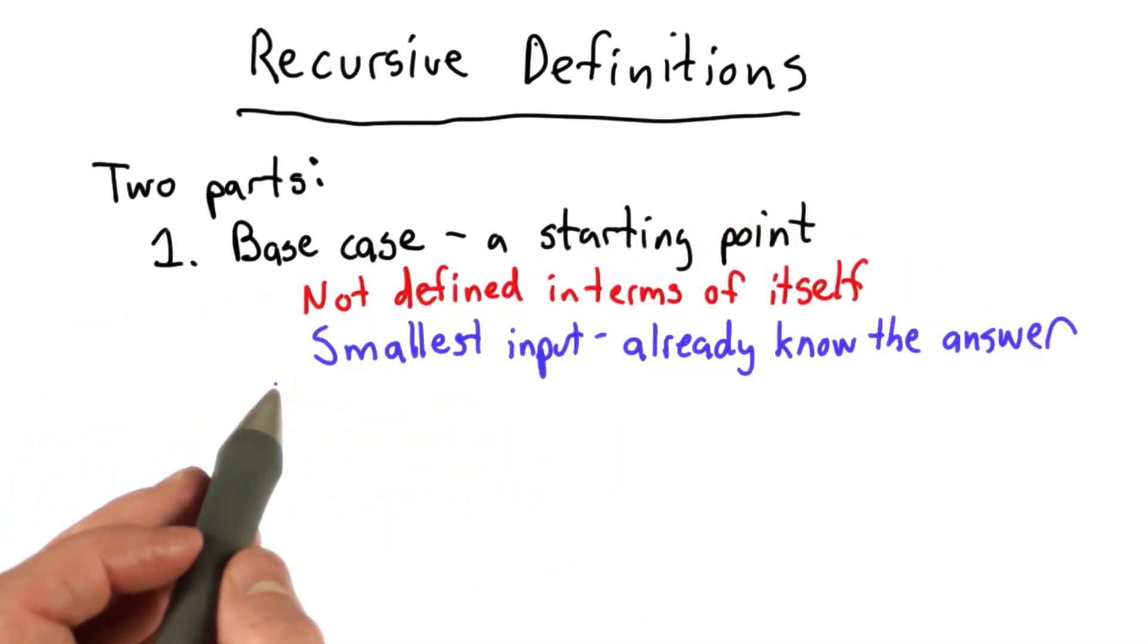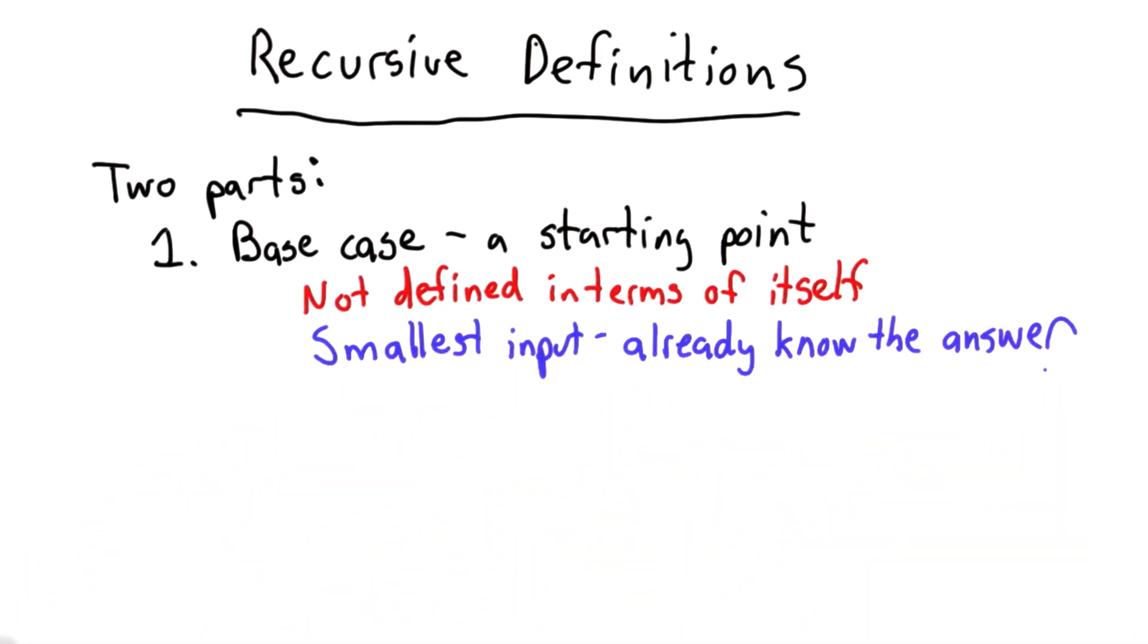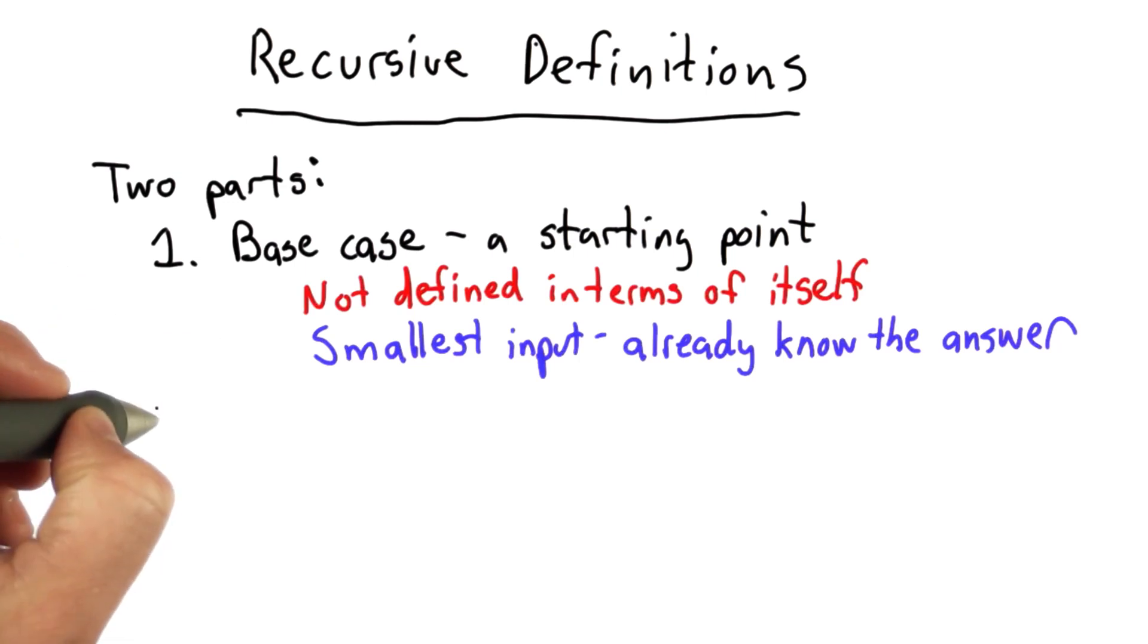So for programs, it's usually going to be the smallest input, or one of the simplest inputs, something where we already know the answer. We don't have to do any computation to figure it out.